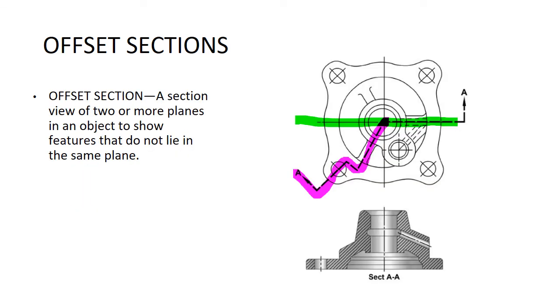Here's another view of an offset section. A section view of two or more planes in an object to show features that do not lie in the same plane. You can see I started out there with the green and then I followed it up with the purple. This would be another example of an offset section.